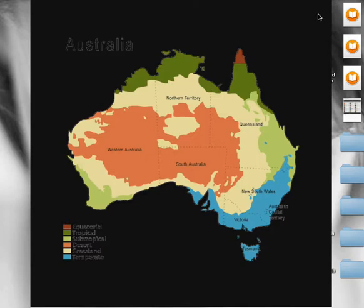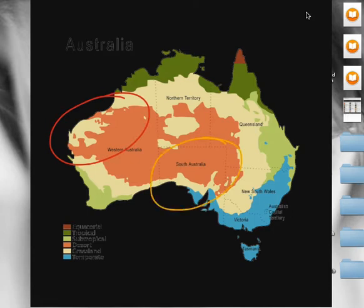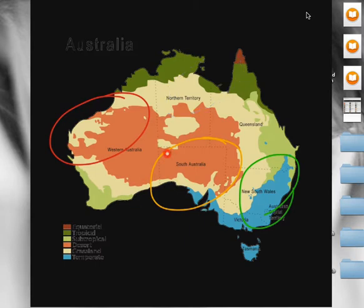Right at the top of the screen there are some tools that we can now use when you're actually presenting a Keynote. One of those tools is we've got different pen tools, we've got a whole lot of different colours that we can highlight and actually use in our presentation. We've also got an undo button that gets rid of it, and a pointer tool as well.